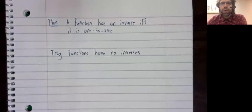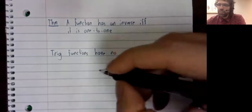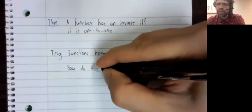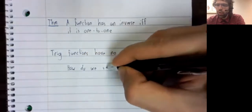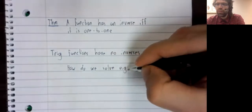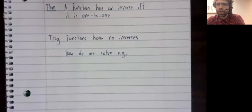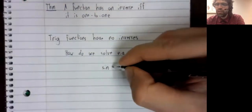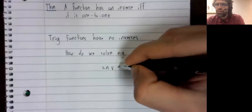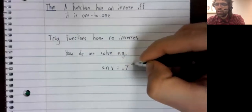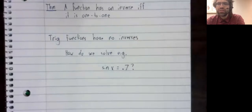Why does that matter to us? Well, how do we solve equations involving trig functions? For example, how do we solve the sine of x equals 0.7?